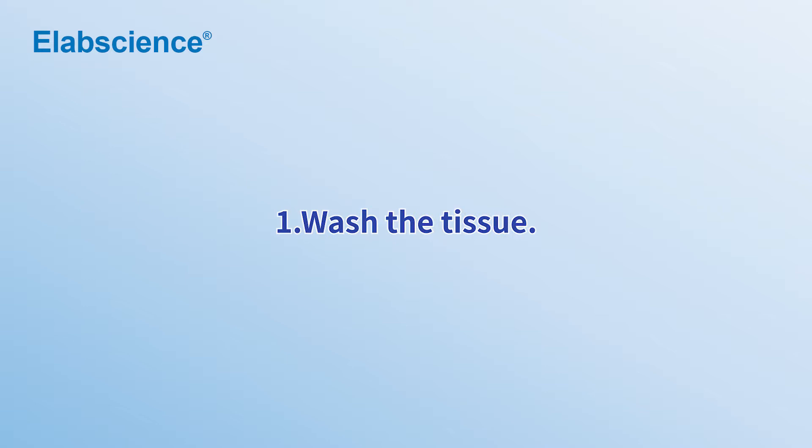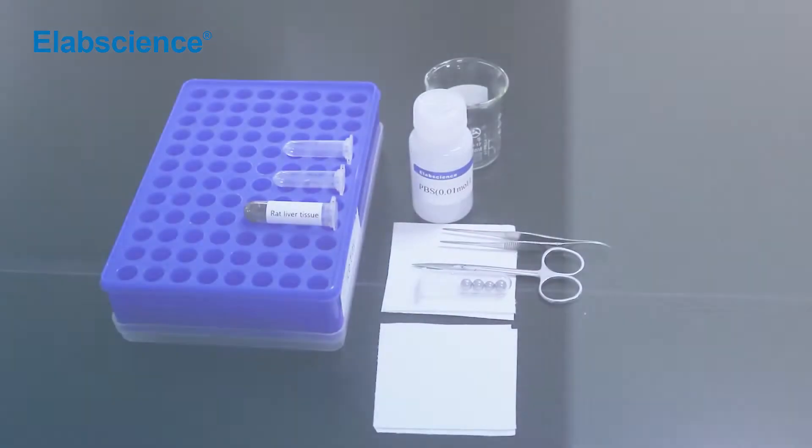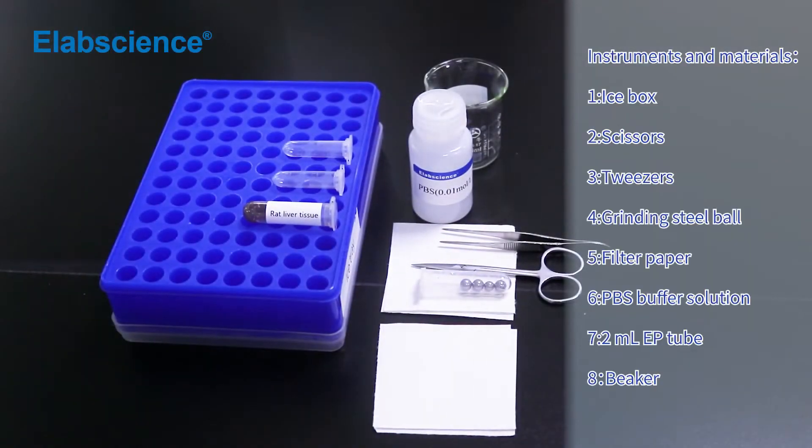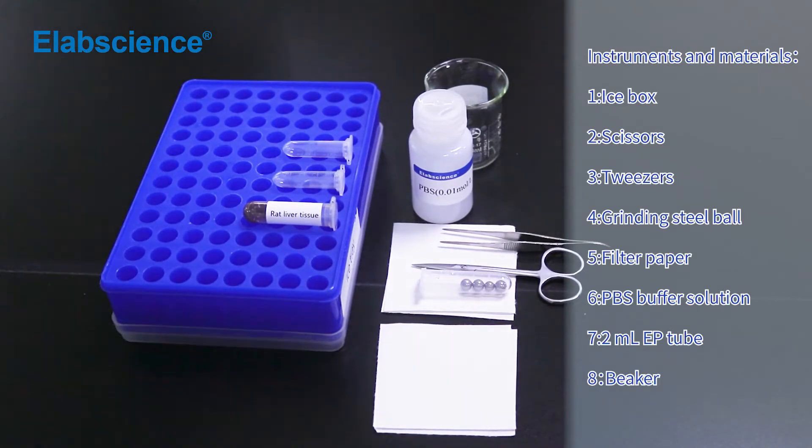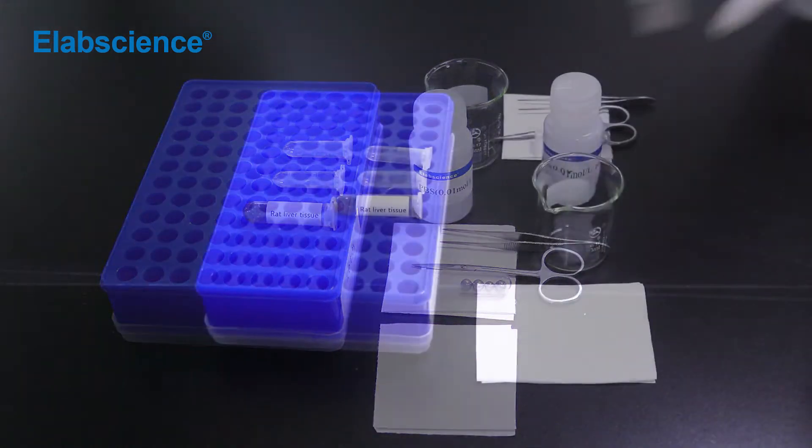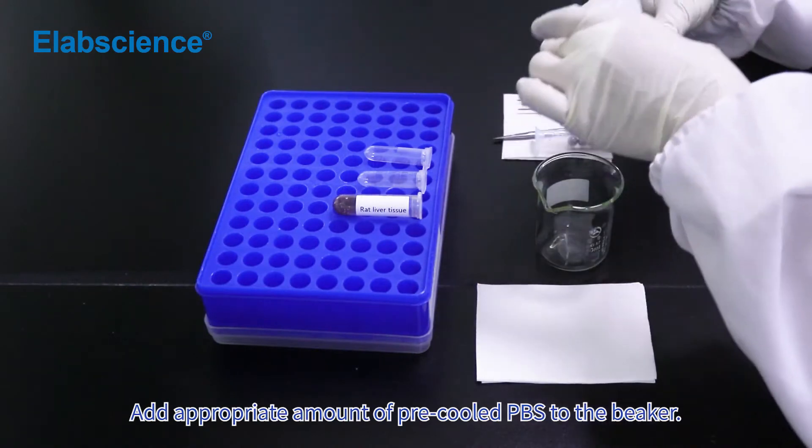Preparation of Animal Tissue Homogenization. Wash the tissue, instruments and materials. Add appropriate amount of pre-cooled PBS to the beaker.